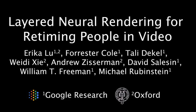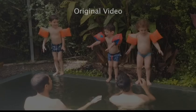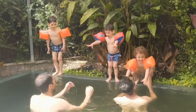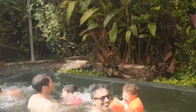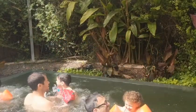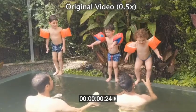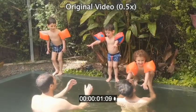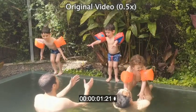We present a method for decomposing an ordinary video into layers, allowing the user to edit the times at which different motions occur. In this video, three children jump into a pool at different times. The video contains complex splashing and occlusion effects.